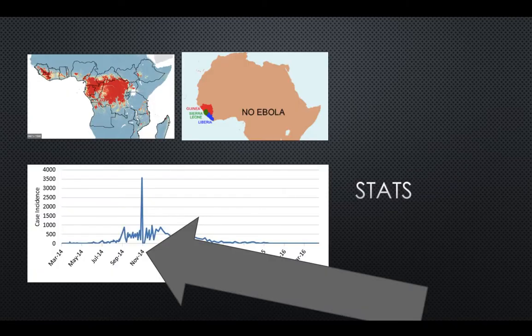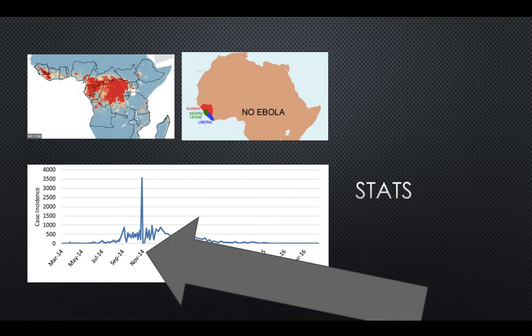Looking at the stats: in the top left corner you can see the main places infected — Guinea, Sierra Leone, and Liberia. You can see how far it has spread across countries. On the bottom graph, from March to September there was little to no spike, but in November there was a spike of almost 3,500 new cases, slowly peaking back down. The Ebola virus tends to peak in summer.